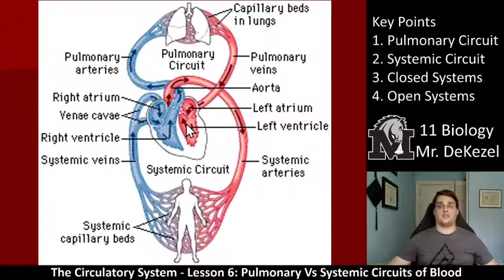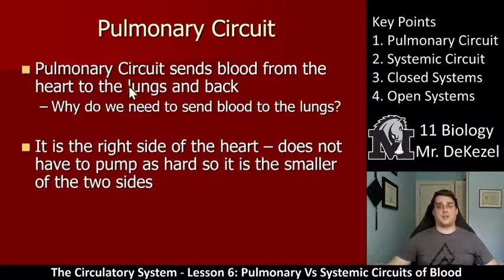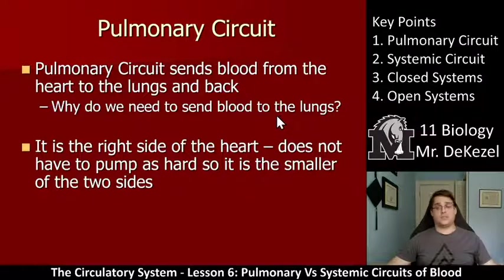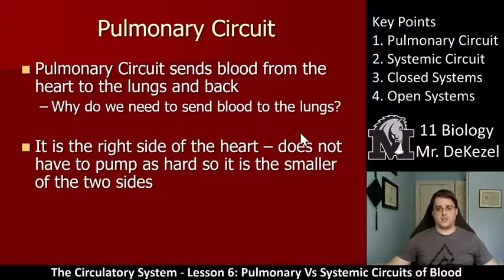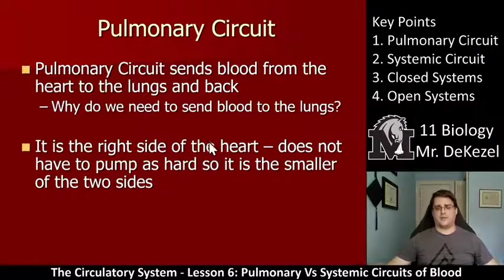Each circuit starts at the ventricles and ends at the atria. The pulmonary circuit sends blood from the heart to the lungs and back in order to oxygenate the blood — we breathe oxygen into our lungs and it goes into our bloodstream. It is the right side of the heart, specifically the right ventricle, that pumps blood to the lungs. The right ventricle is smaller because it doesn't have to pump as far — just to the lungs and back.